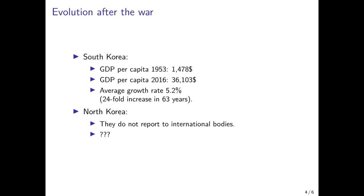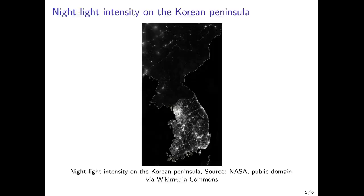What about North Korea? They do not really report to international bodies, so we can only guesstimate the level of per capita income in North Korea. One way of doing that is to look at nightlight intensity — pictures from space of the intensity of light during the night, which is highly correlated with economic activity. The brighter an area is, the higher is typically per capita GDP. The darker an area is at night, the lower is per capita GDP. And if we do so, we see the following picture.